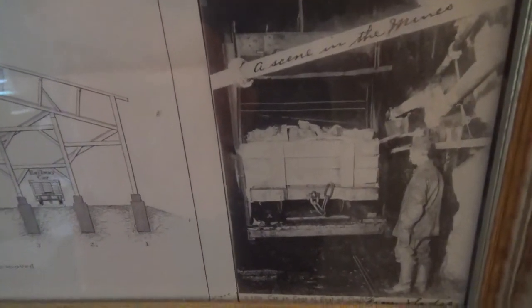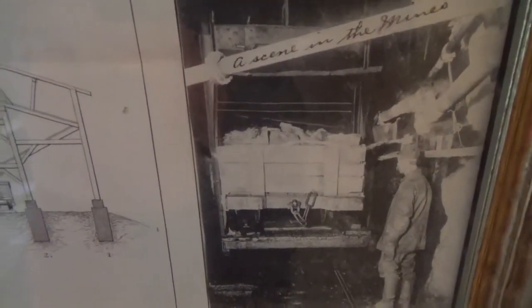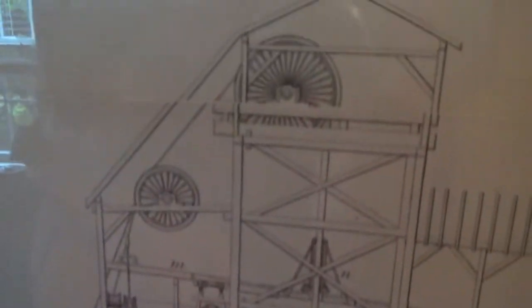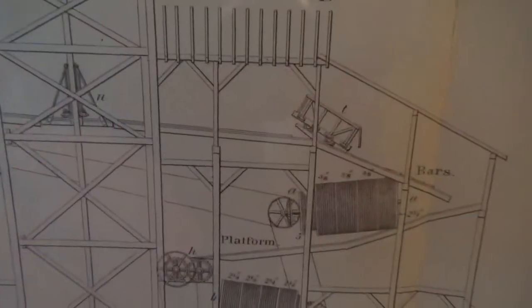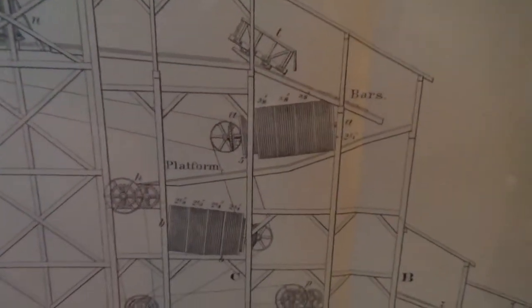Here we have a gentleman at the bottom of a shaft. At the bottom of this shaft, that's what it would have looked like. That's a footman and he's putting coal cars on the cage to go up and get hoisted out of the mine. Then you come up and they would go down there and get dumped for processing.